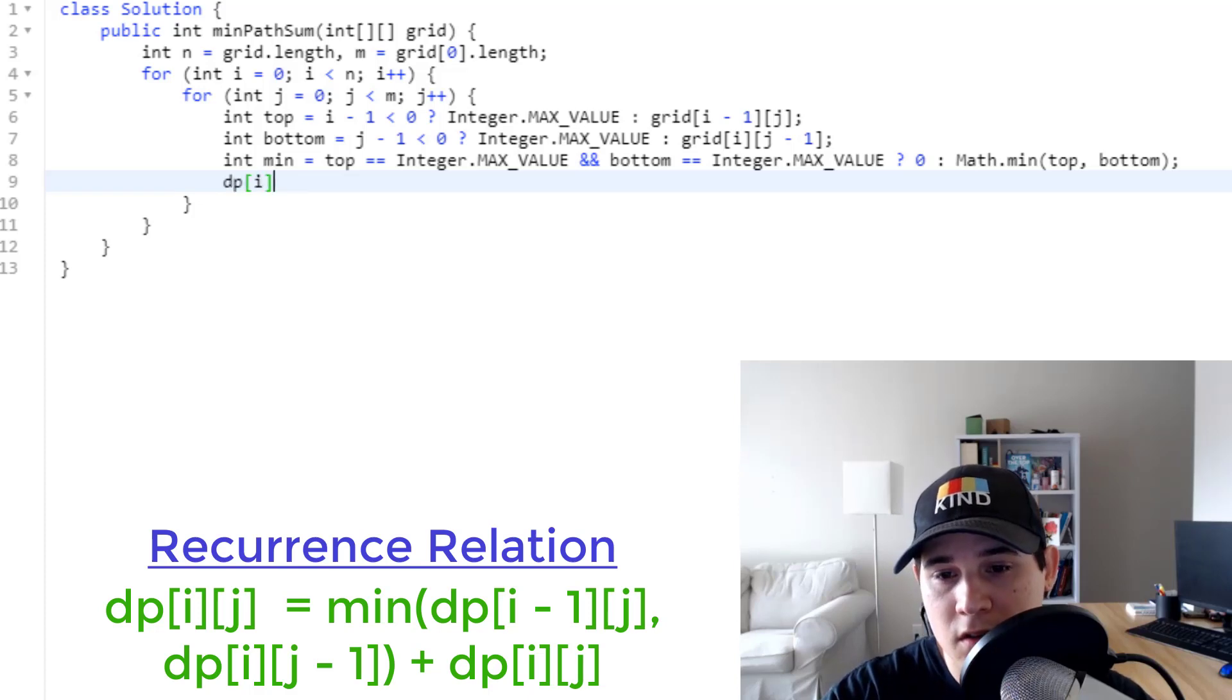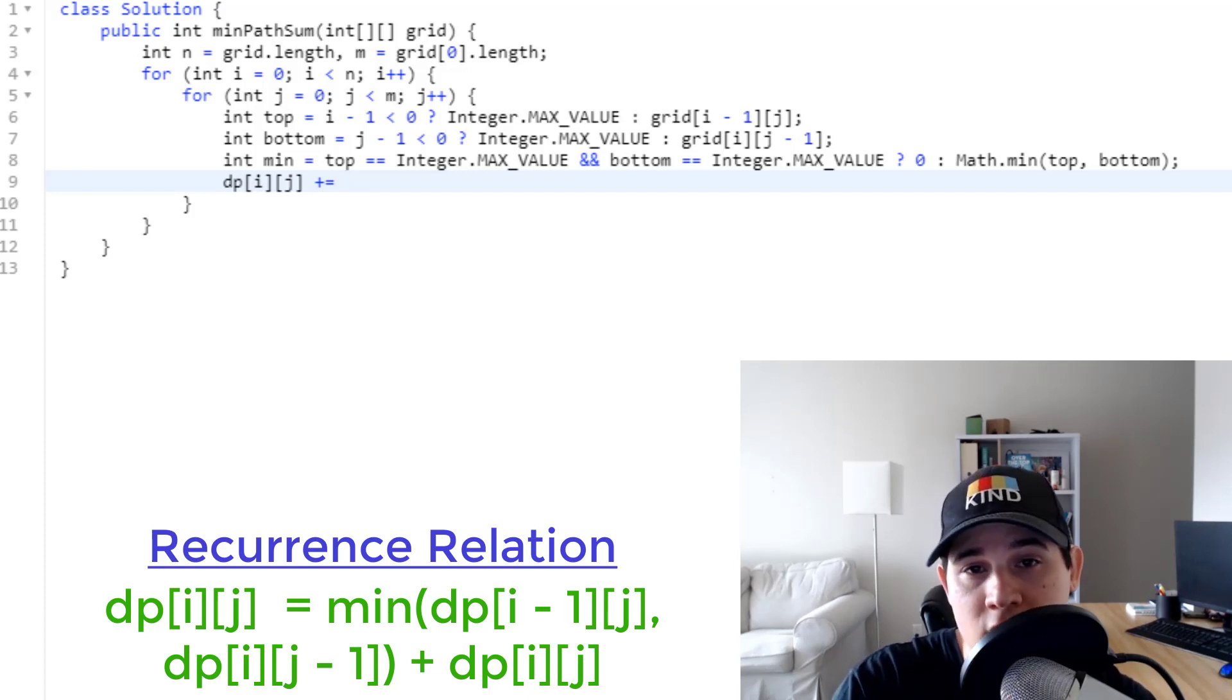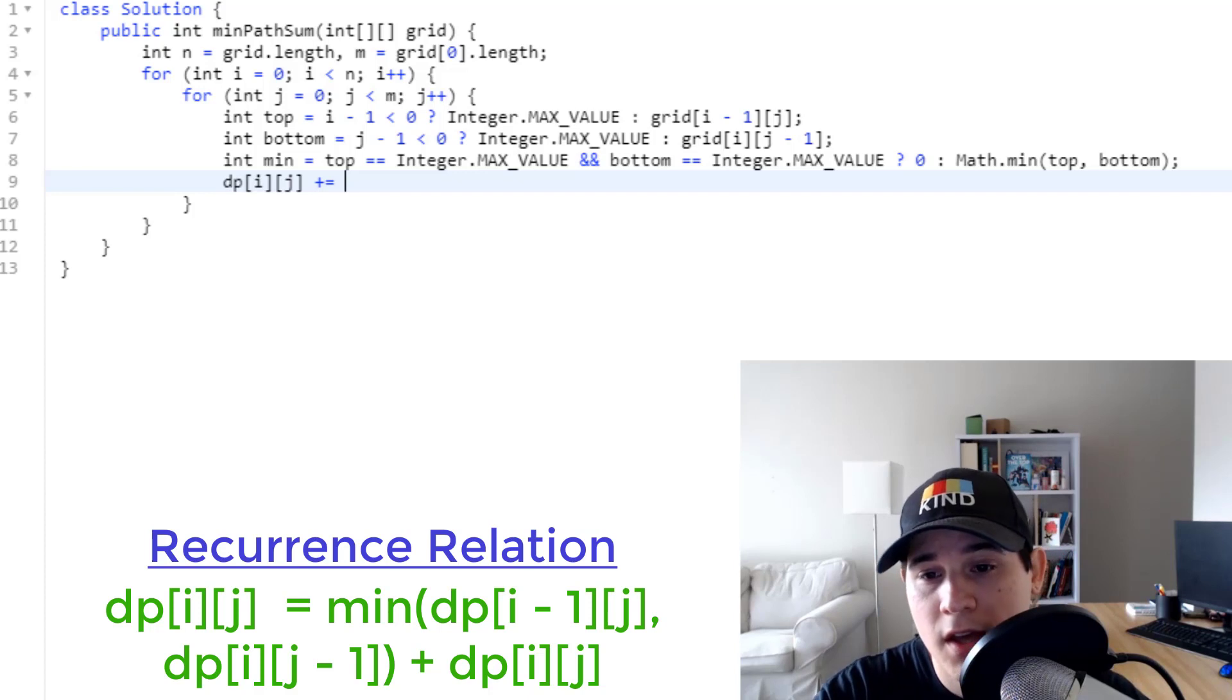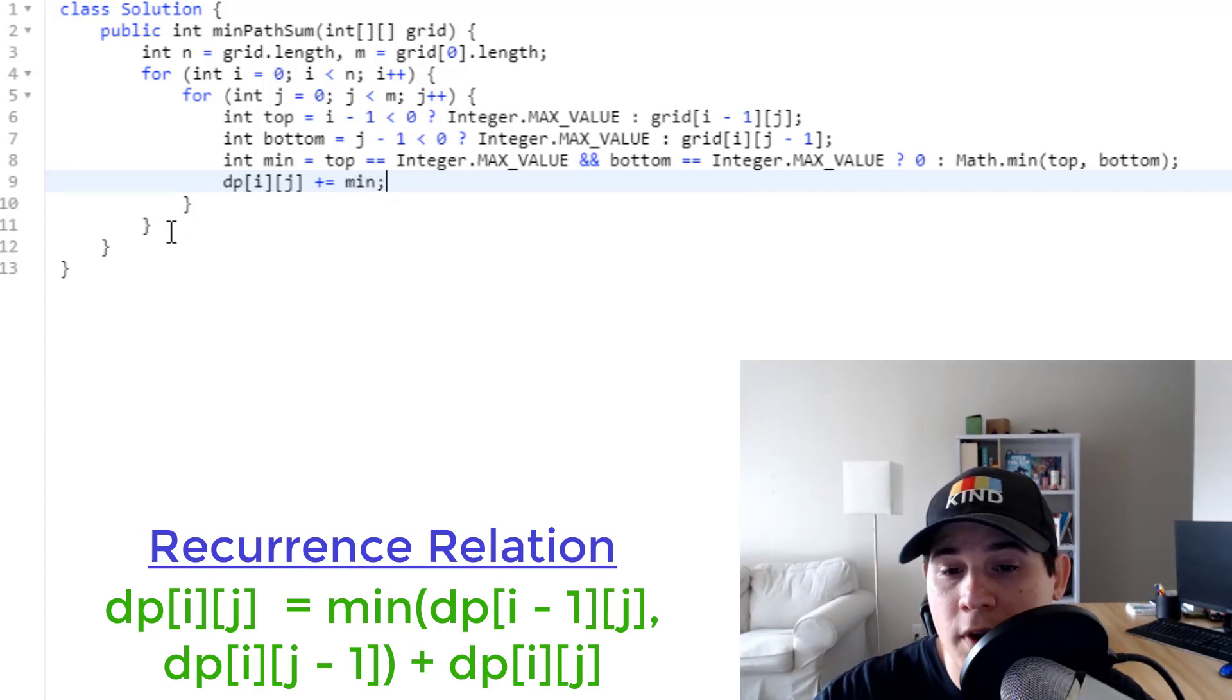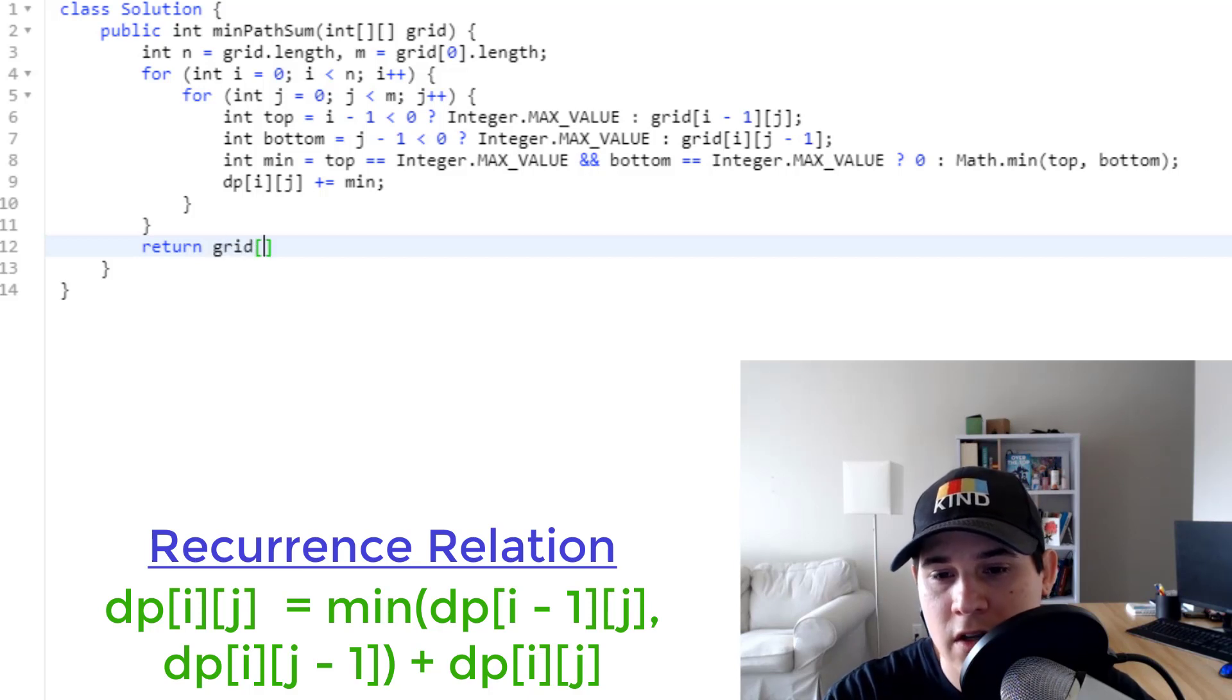So we can say dp of i, j plus equals, because we're taking the current element that we have in dp of i, j and just appending it to that current position. And we're appending min. And then finally, all we have to do is when we come out of this for loop, we need to return the bottom right position. So we just say return grid, at position n minus 1, m minus 1.